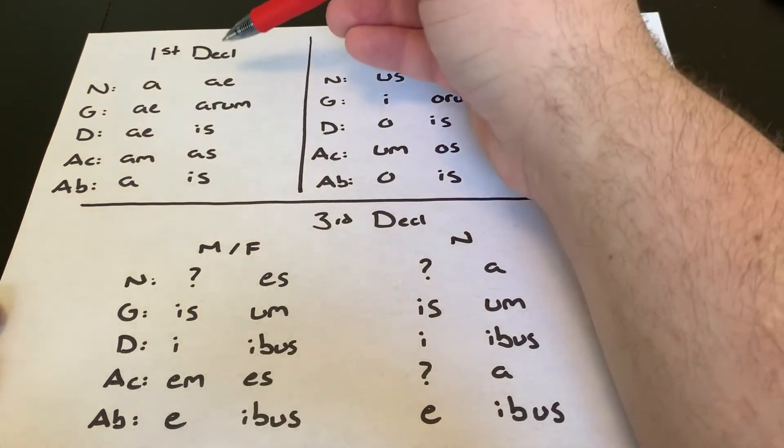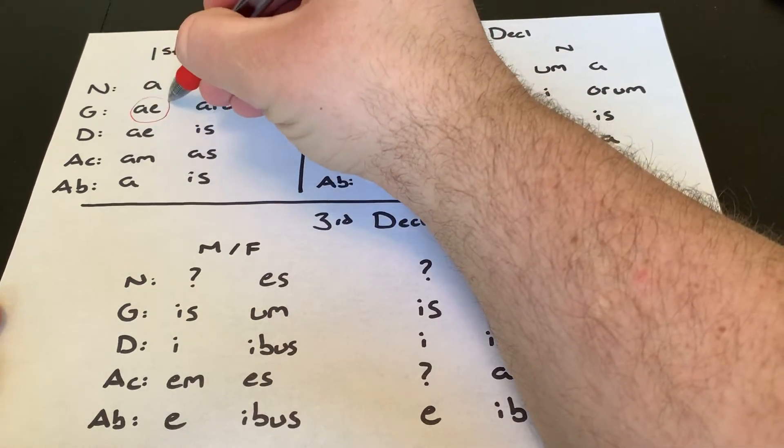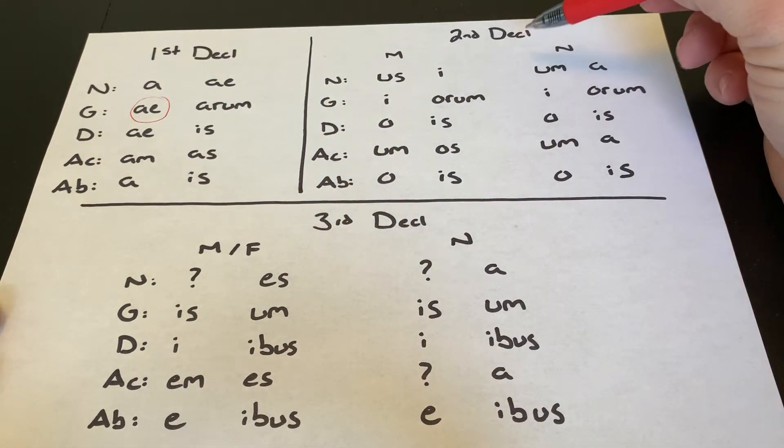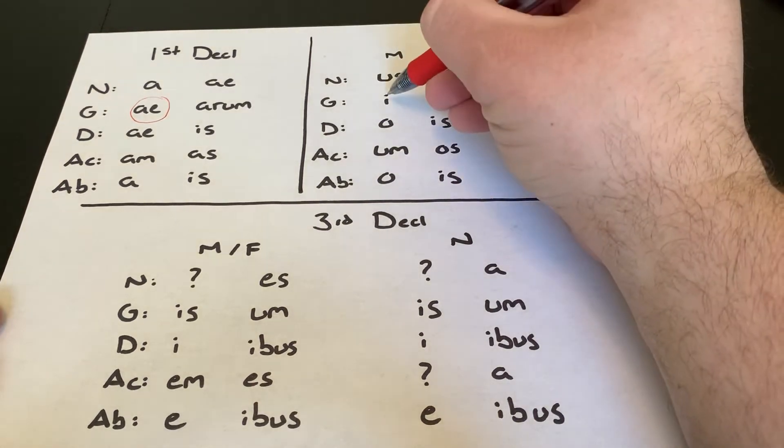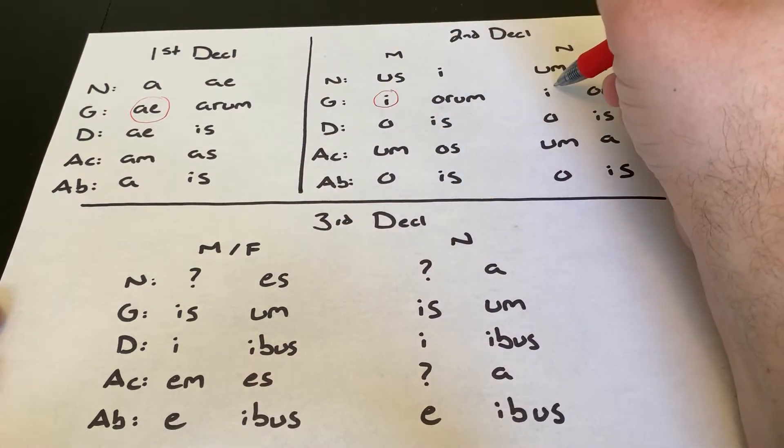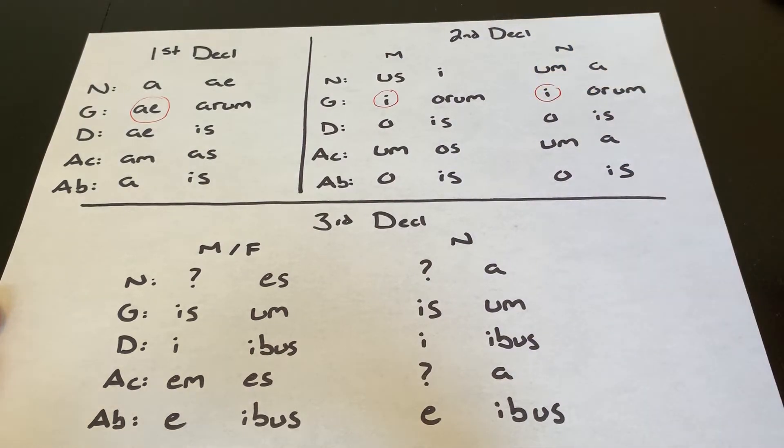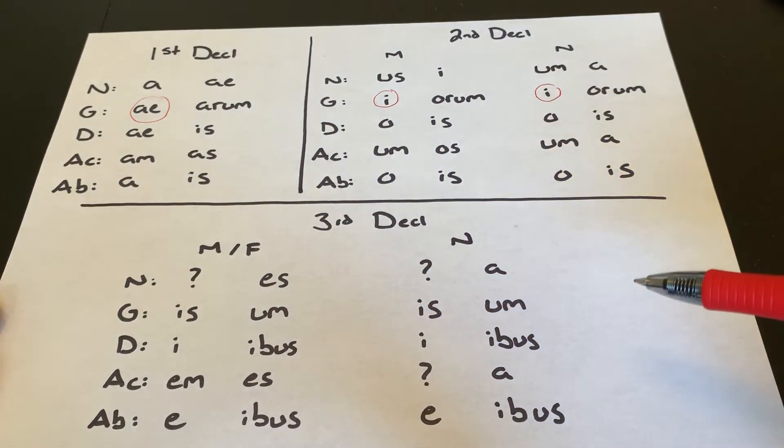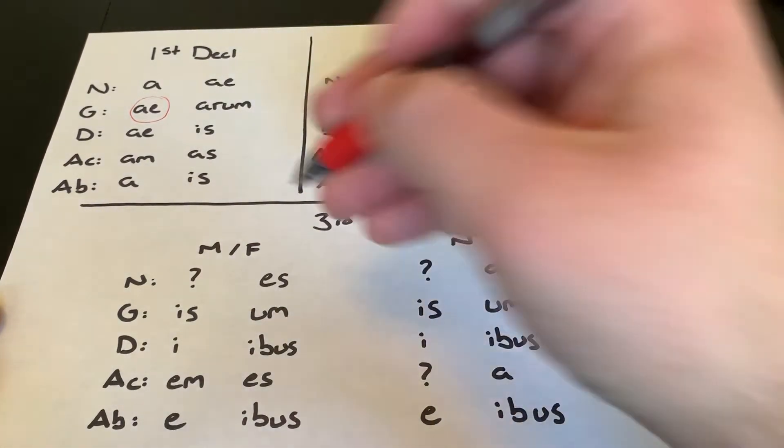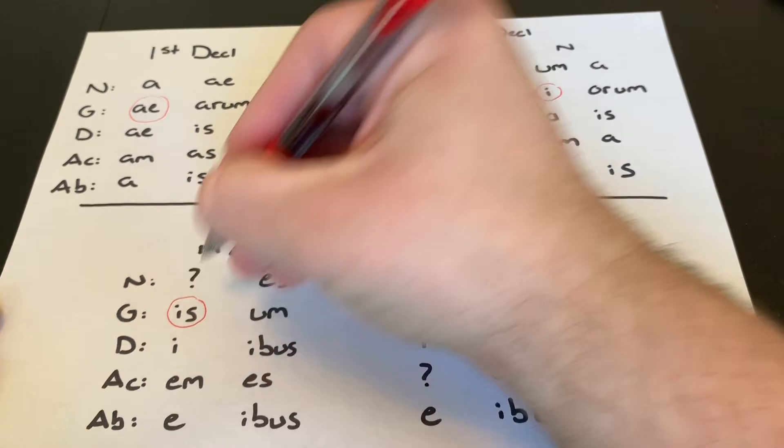So first declension's genitive singular is AE. Second declension which could be masculine or neuter words, both of them the genitive singular is I. And for third declension which could have masculine feminine or neuter words, for both of them the genitive singular is IS.